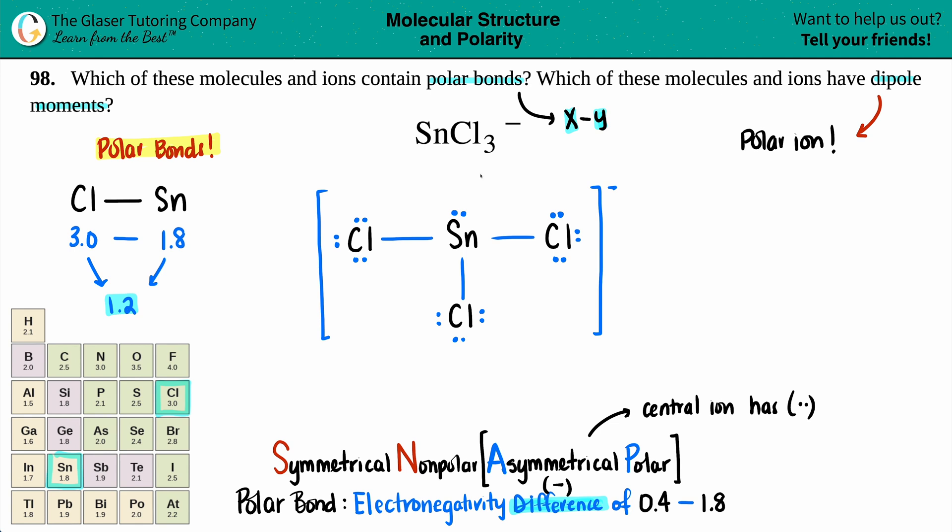So in this example, I have tin, which is Sn, and it's got dots. So I don't even care what's going on around the ion here. Tin has those lone electrons. This definitely has to be a polar ion. And because of that, it has a dipole moment. And that's the answer for this one. So we got polar bonds, and we got a polar ion, which has a dipole moment.